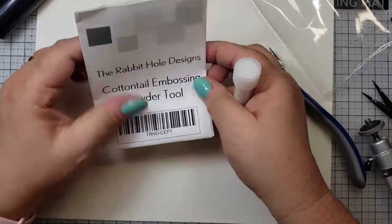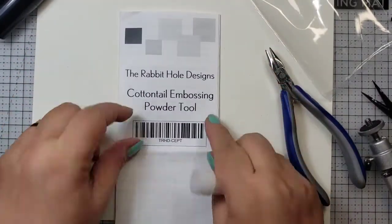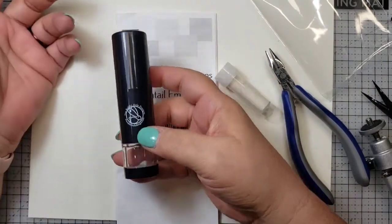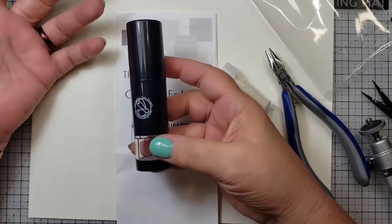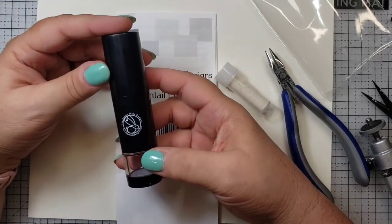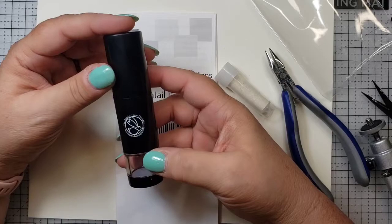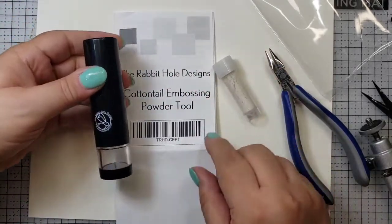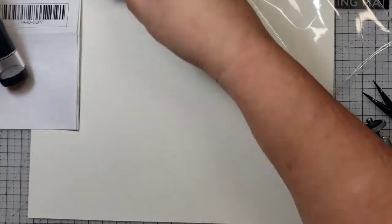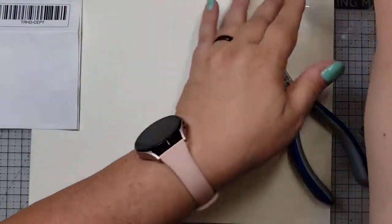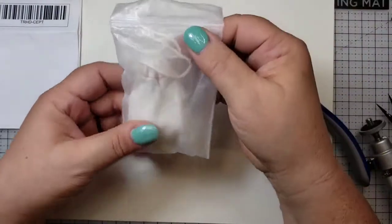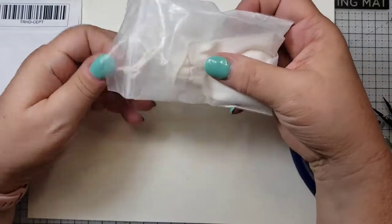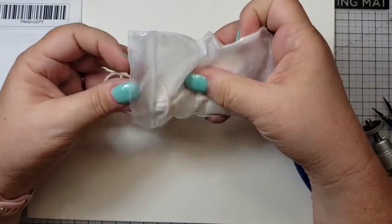Now this paperwork that comes with it has all the great instructions and details. What's great about this product is you can actually clean it. You can wash it, dry it and reuse it if it gets a little clogged up, if you want to change the type of powder that's in there, you have that option. So before I get into so many details with this, let's set this aside and let's take a look, get some of the packaging out of the way.